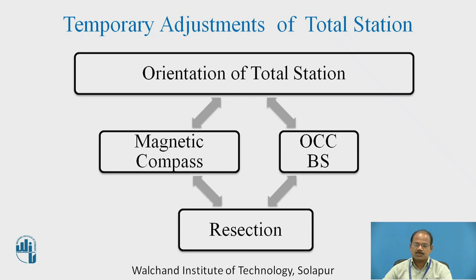Using a magnetic compass at the first station, the directional sense of the instrument is understood by the instrument. The angular position of different points in the horizontal plane will always be in reference to the arbitrary north picked up with the magnetic compass.